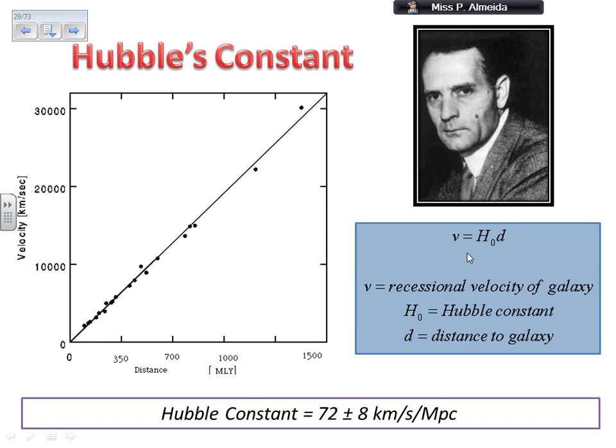Hubble's constant is still a number that we don't quite know. It does depend on the data that we have and also because the universe seems to be accelerating at a faster rate than we were expecting. So it's not just about the data that we have and the gradient of the line changes, there is other stuff going on in the universe.